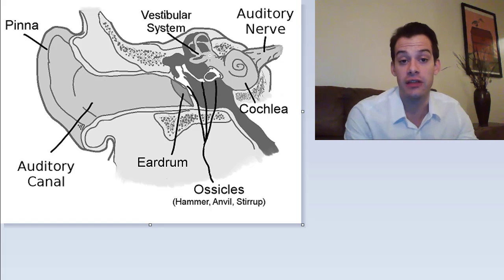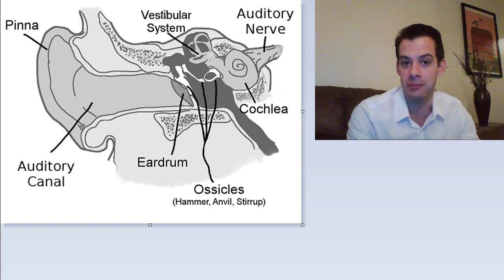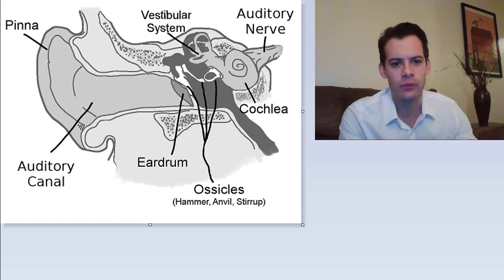Just above that, there's another bag called the utricle. This comes from the Greek for little bag, same root as uterus.